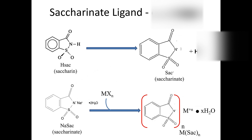For the first part of Experiment 5, dealing with synthesis of a transition metal complex, we're going to use the saccharinate ligand — a deprotonated version of saccharin. The saccharinate ligand, also known as saccharin, is a carcinogen, meaning it causes cancer, so we need to be careful. The saccharinate salt we're using is sodium saccharinate dihydrate, and we'll mix it with our metal halide to produce a transition metal complex.